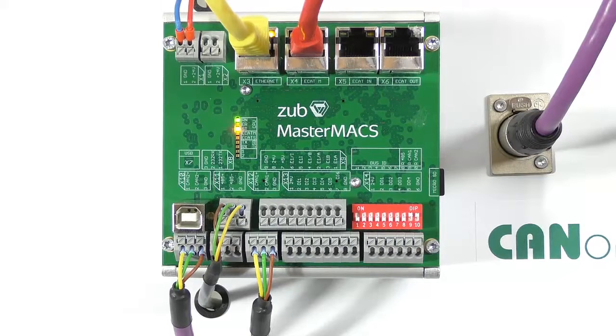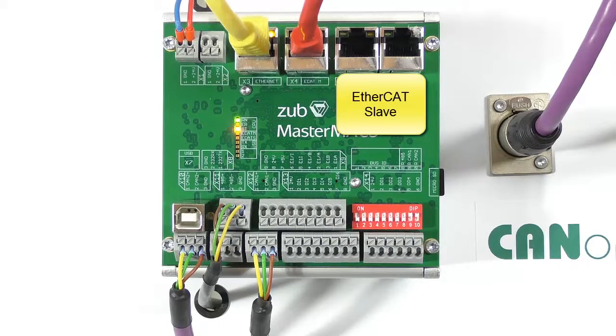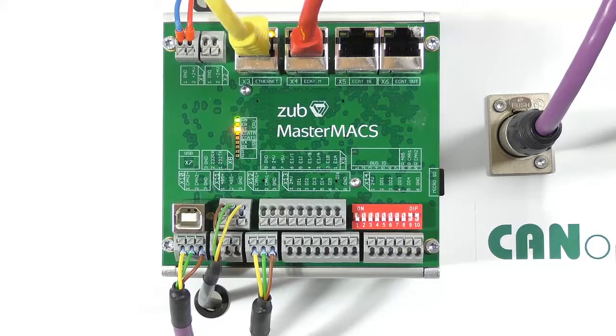You can see on the MasterMax other interfaces not connected at the moment. For example the MasterMax has an EtherCAT slave interface which could be connected to a PLC from Beckhoff or other PLCs or PC.